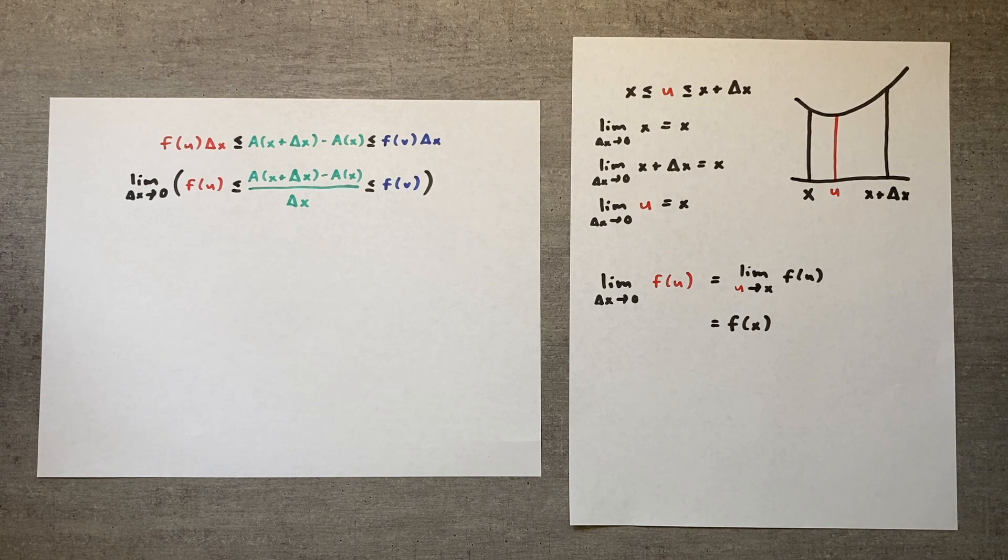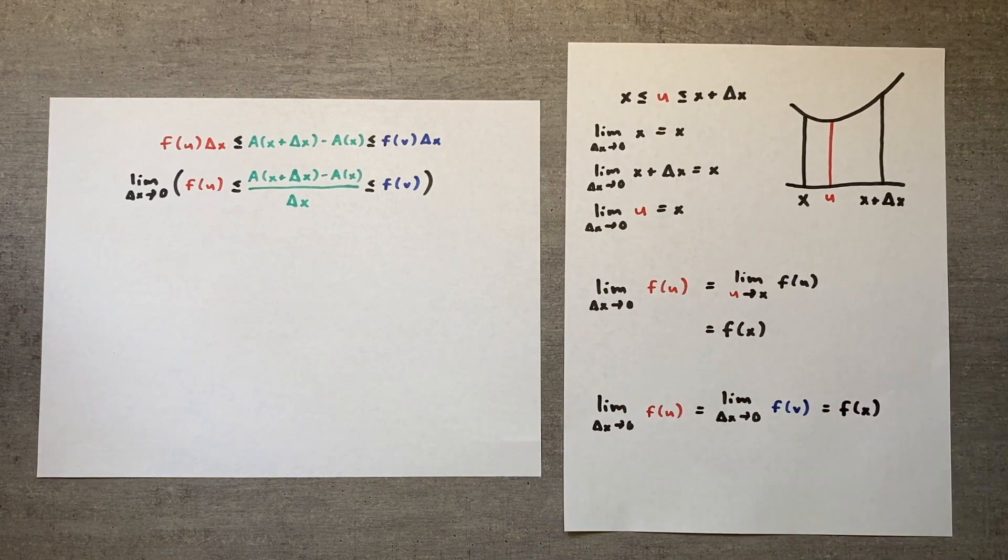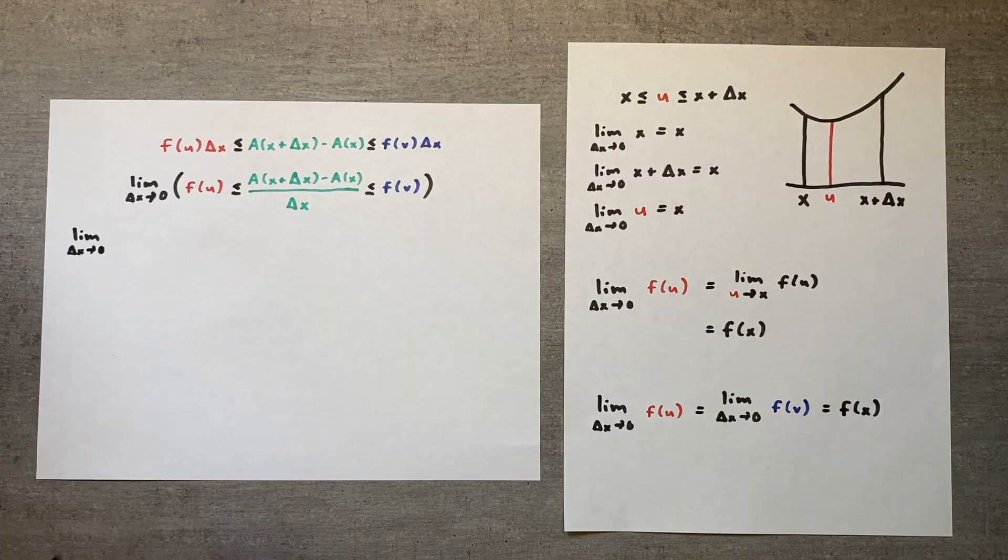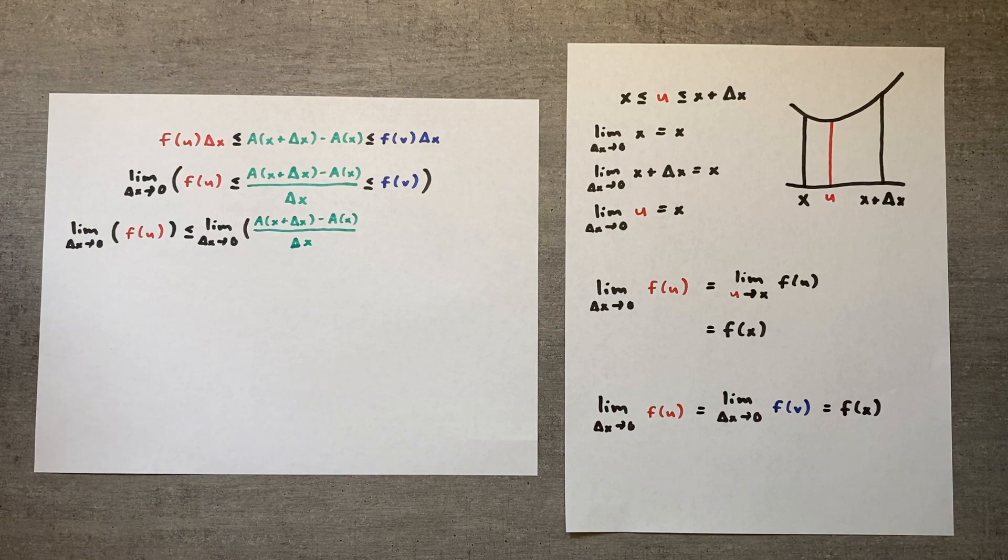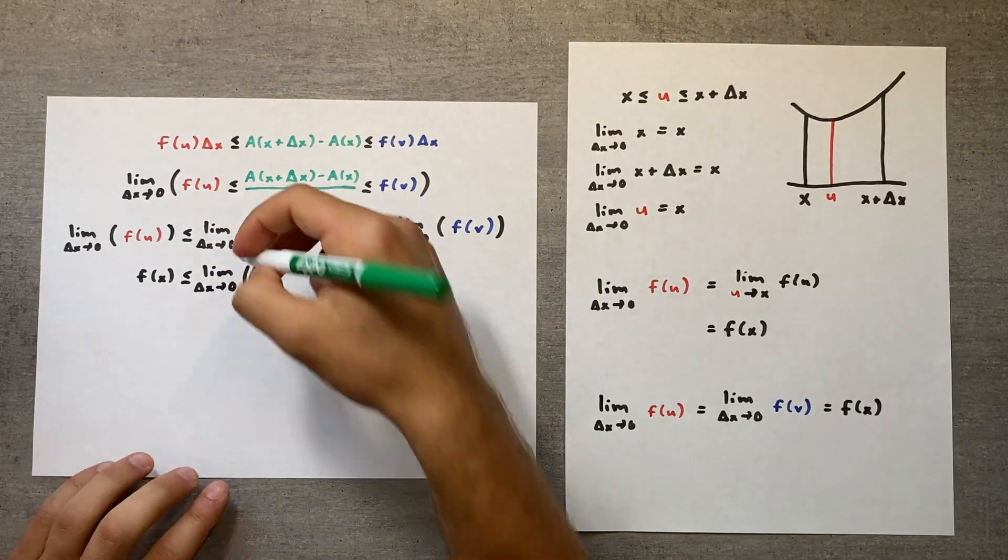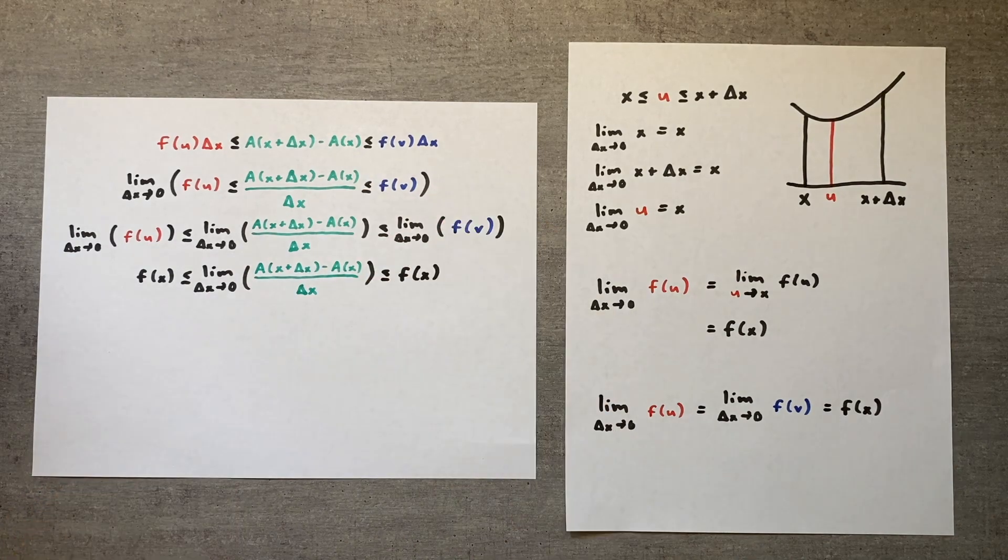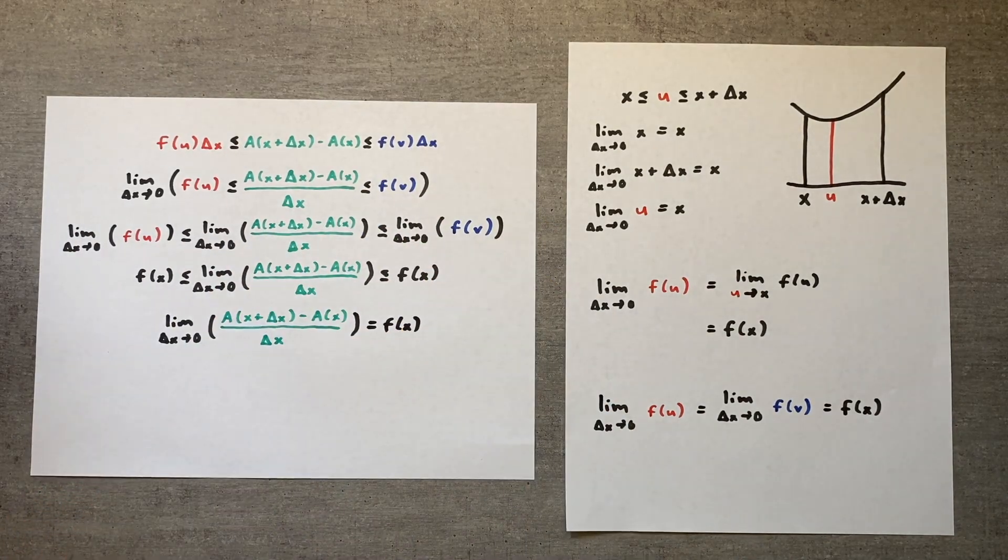Applying the same logic for v, we have the value of two of the three limits in our inequality. Let's finally put everything together. Substituting in our values for the left and right limits, we see that the limit in the center is sandwiched between two limits that both approach f of x. Using the squeeze theorem one last time, we show that the limit must therefore be equal to f of x.